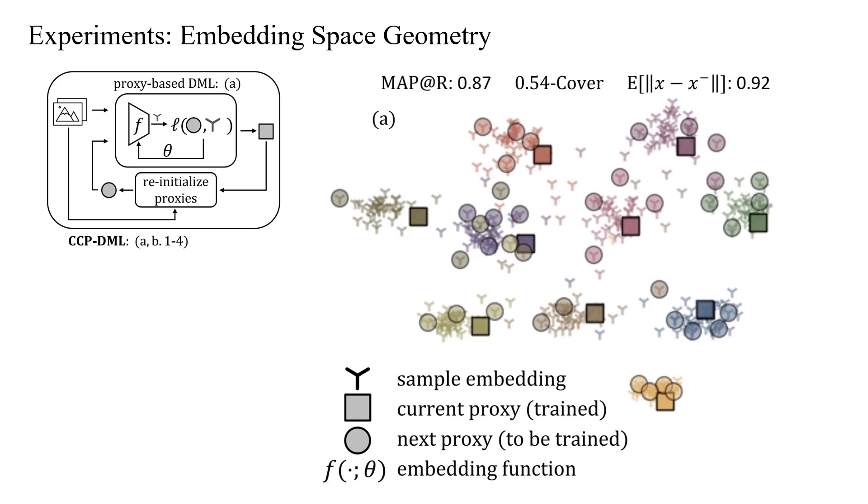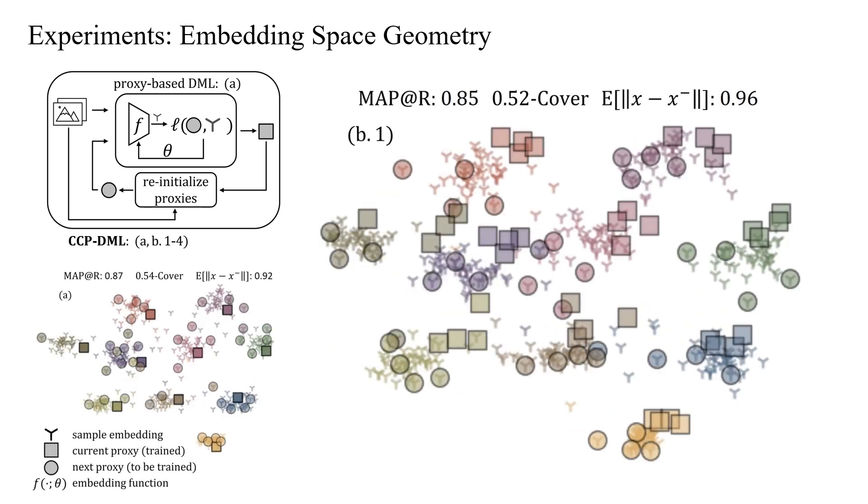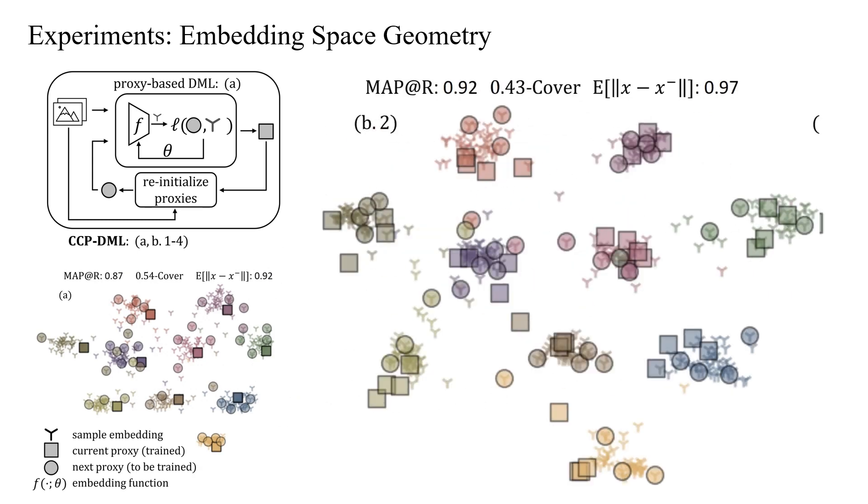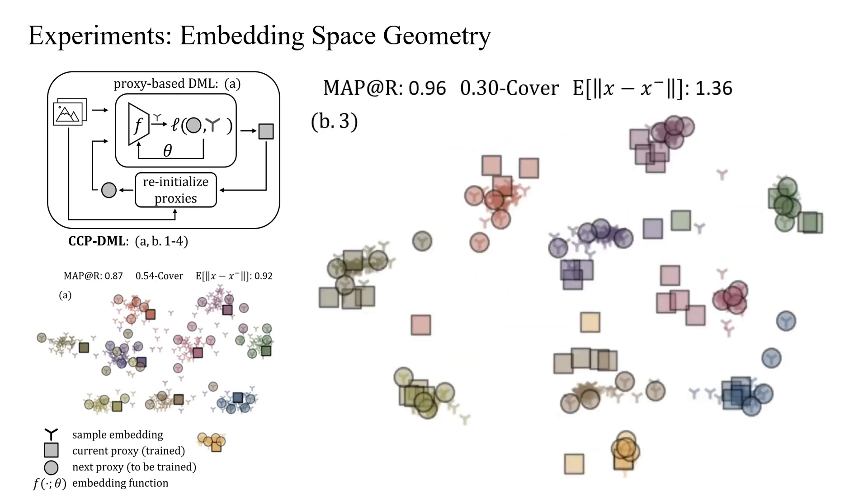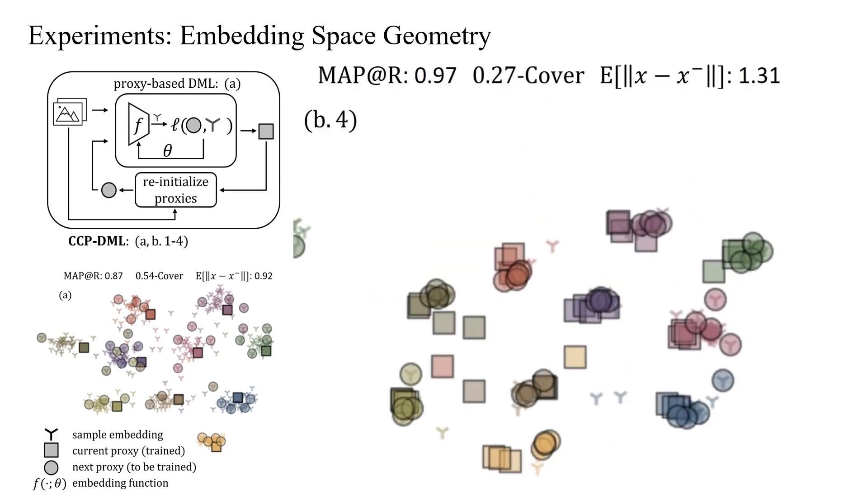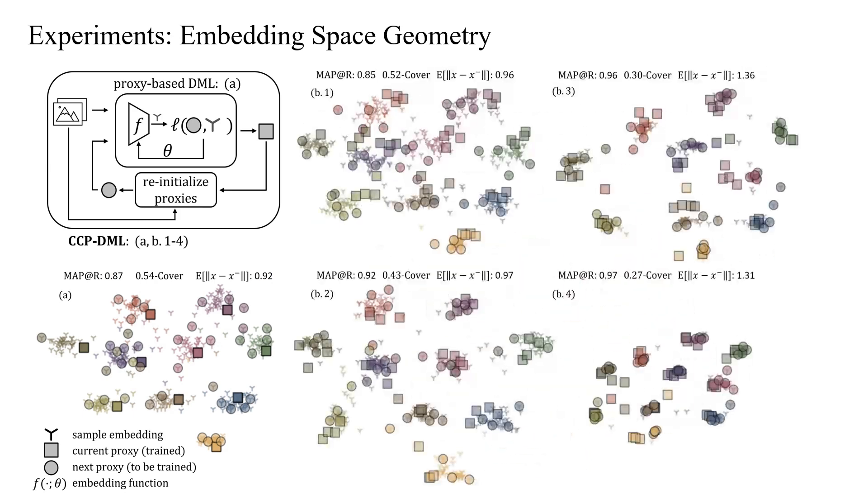However, as we apply our method iteratively, we observe a transformative effect. At each step, diverse proxies emerge, effectively reducing the covering radius and increasing inter-class distances. This dynamic evolution showcases the potency of our approach in refining and optimizing the embedding geometry for superior metric learning outcomes.